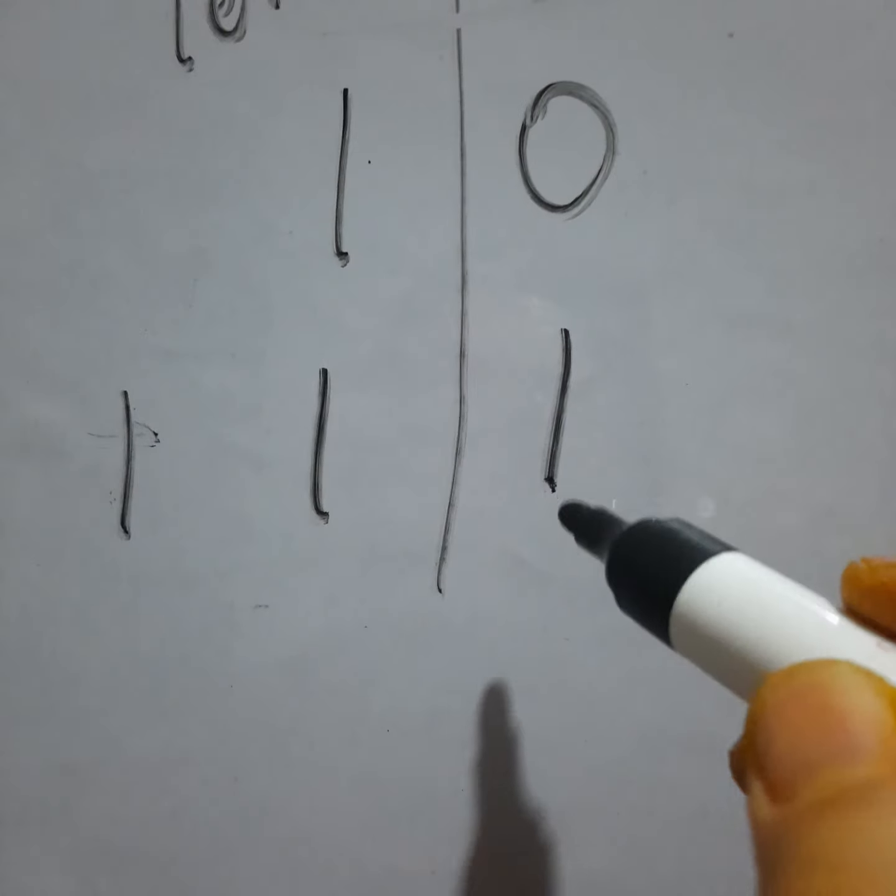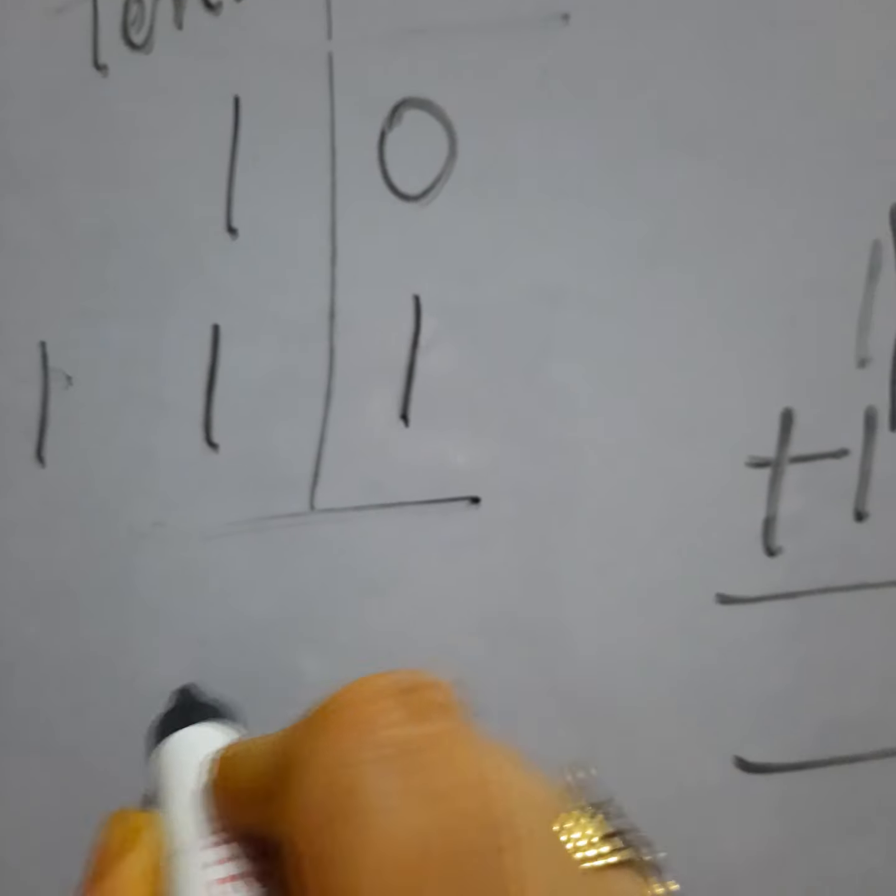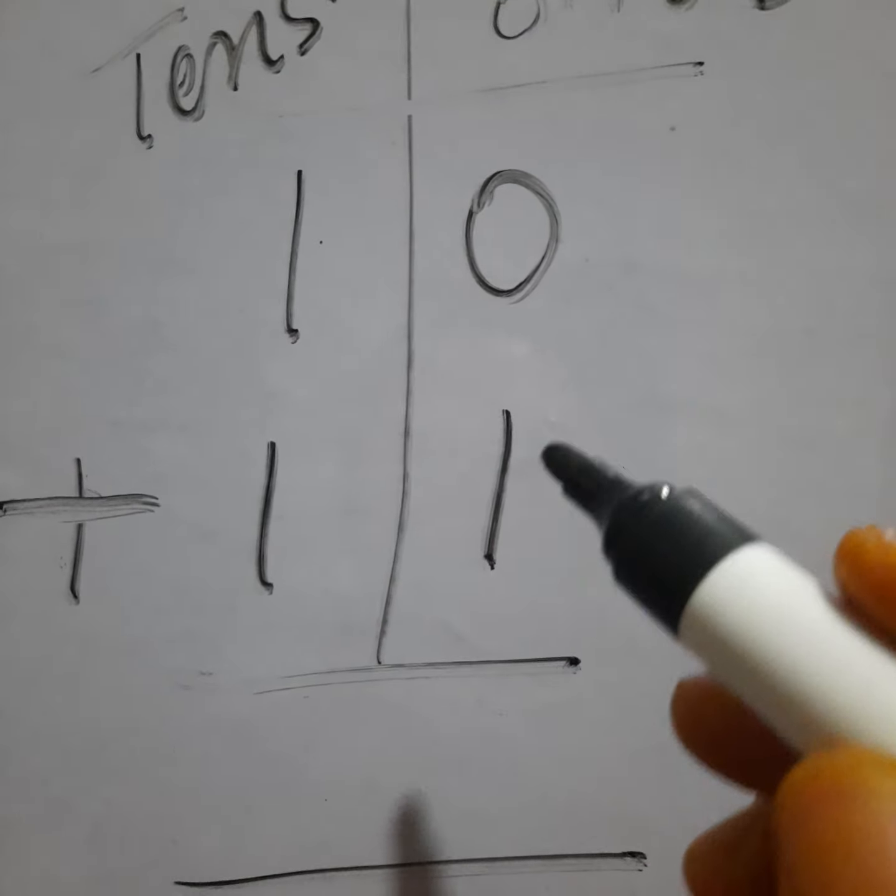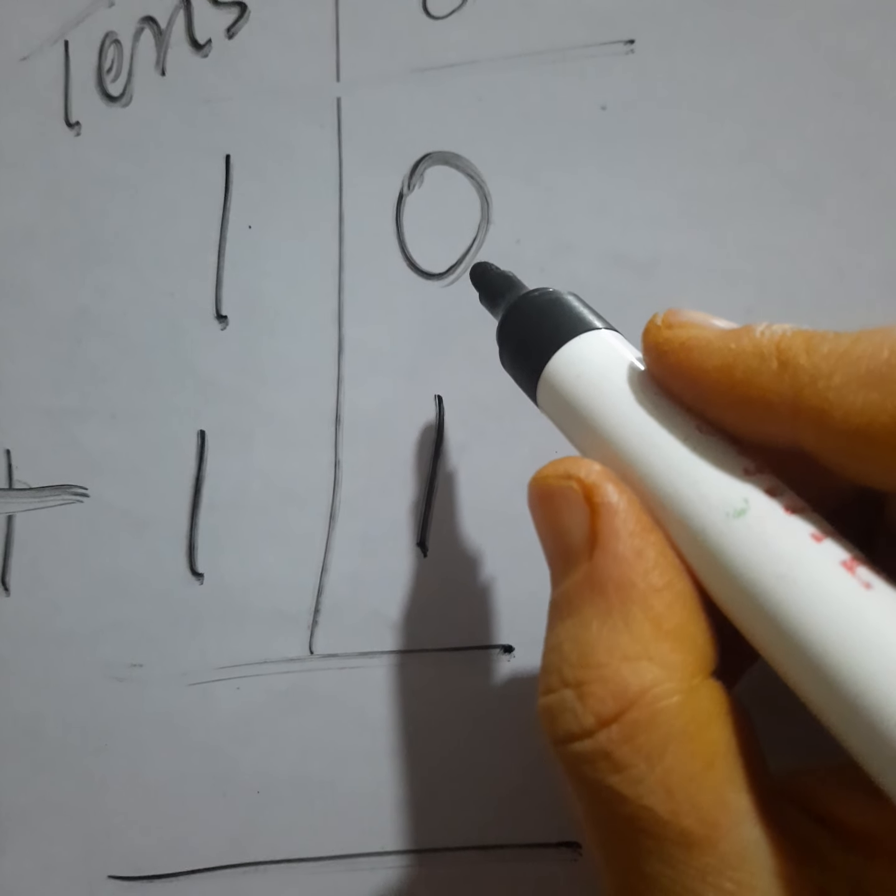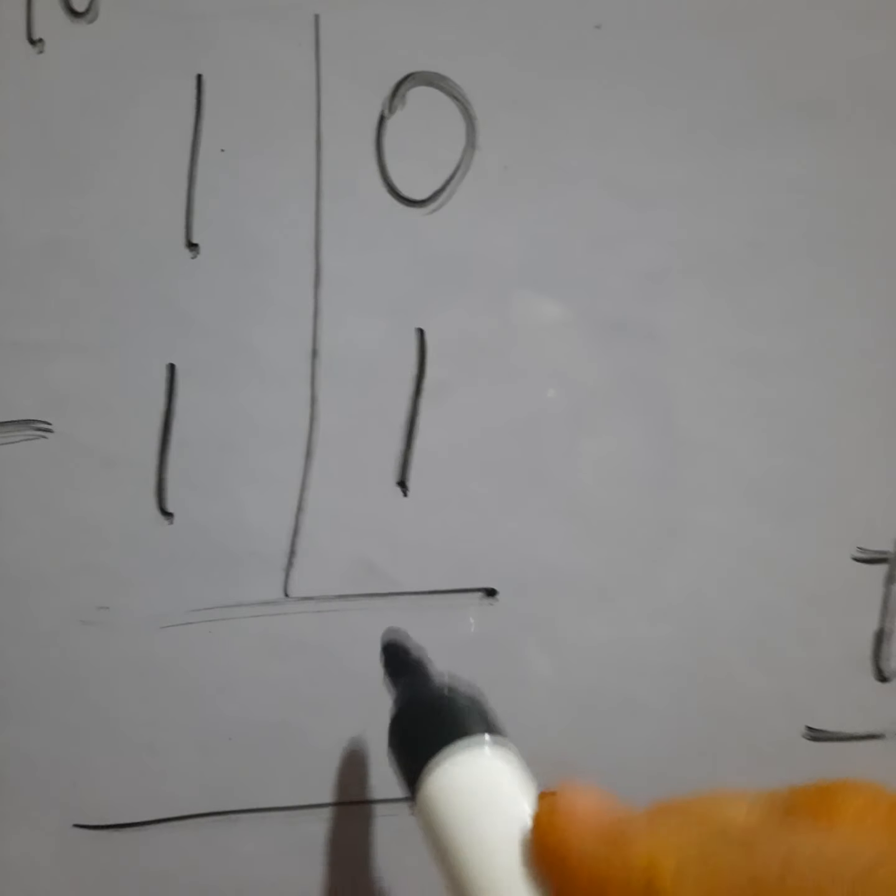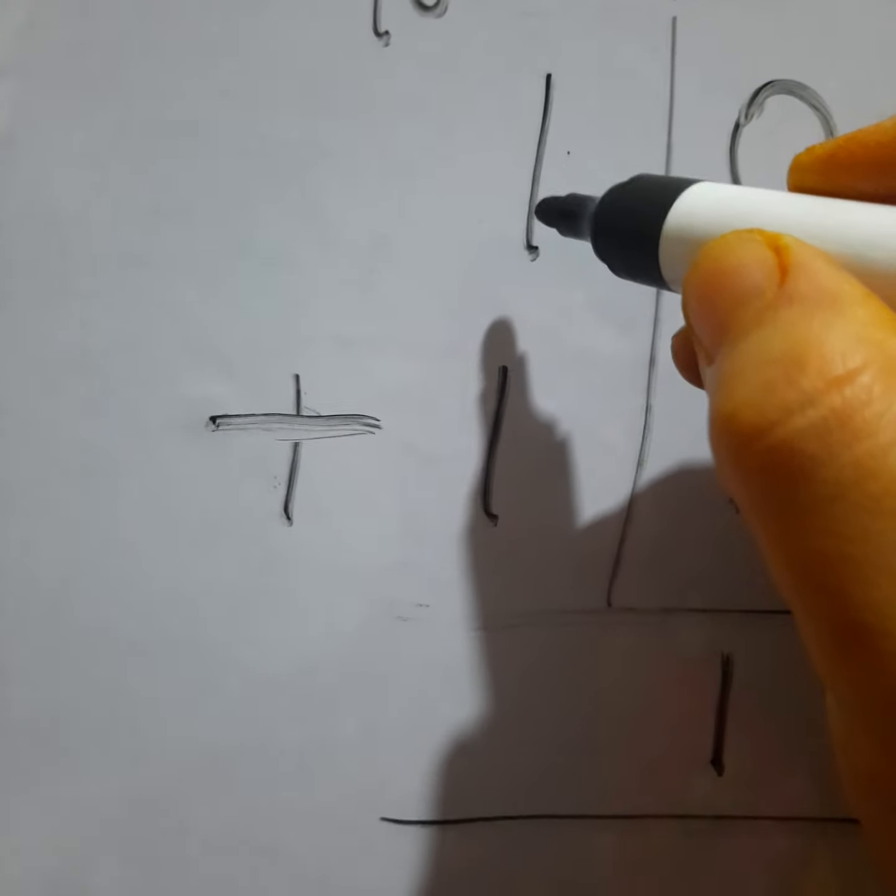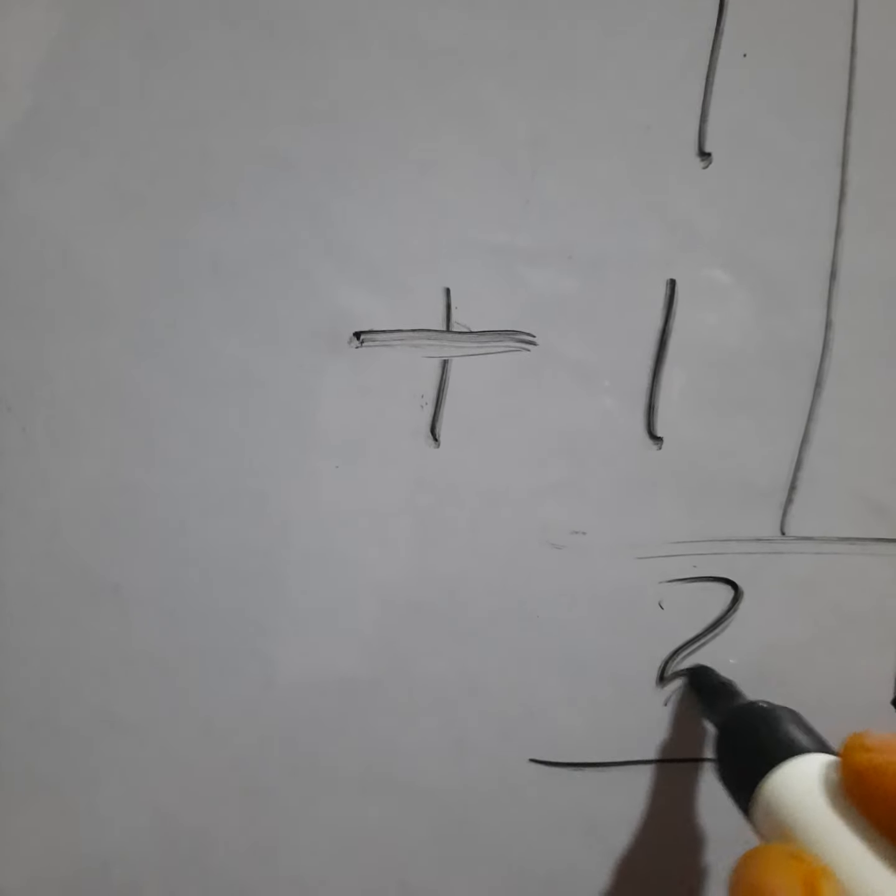Now we add these together. In ones place, zero plus one equals one. In tens place, one plus zero equals one. One plus one equals two. So when we add these two digit numbers together, we get 21.